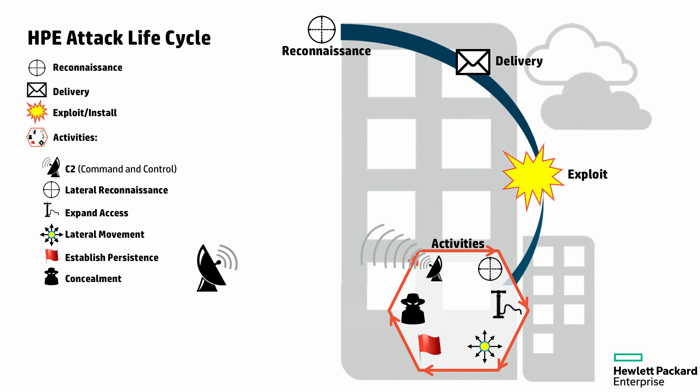Finally, and typically as part of the same process, we need to conceal what we're doing — ensuring there is no way of identifying the activities, systems, and processes we've breached. This involves deleting logs, ensuring our data is carried within legitimate network traffic, removing rules that could identify our activities, and opening firewalls at key protocols and ports to make it hard to be blocked. It's about concealing what we're doing so that ultimately our activities are hidden from detection radars.